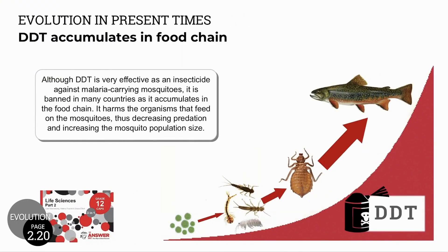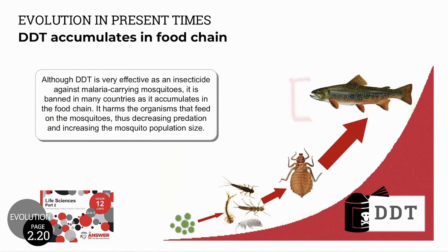Although DDT was a very effective insecticide, it was banned in most countries because it accumulated in the food chain and caused large-scale damage to top predators.